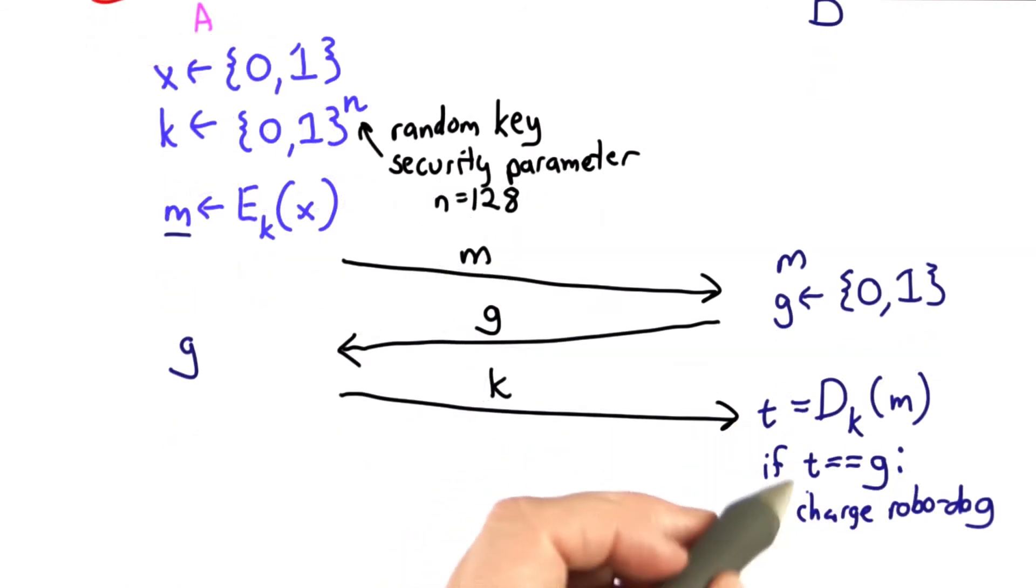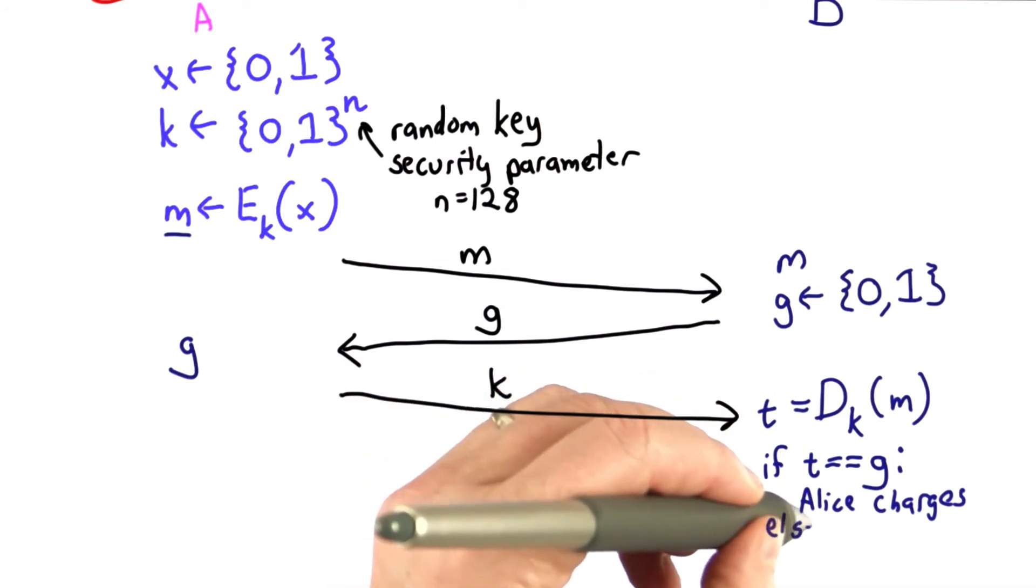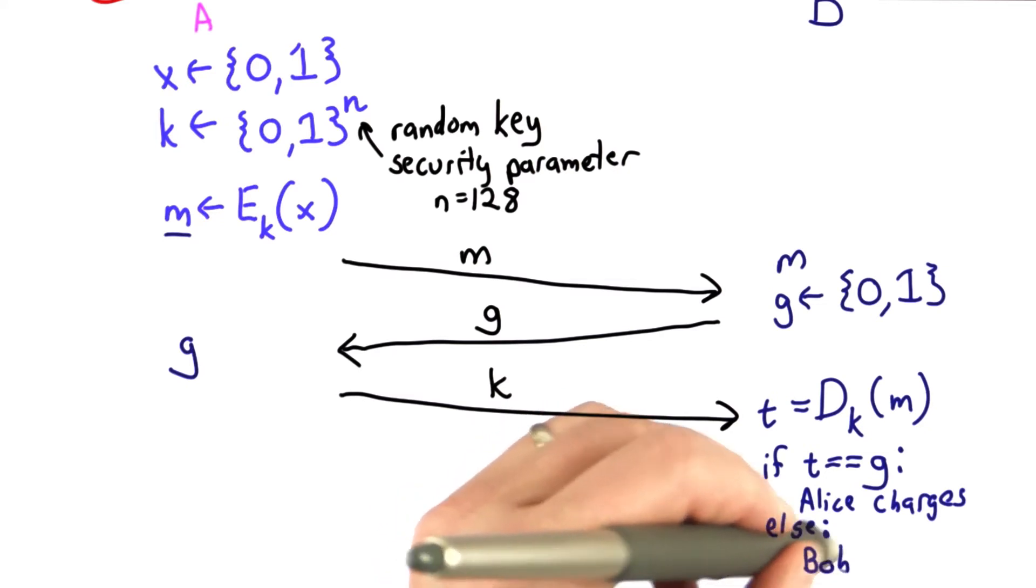At this stage, Bob can check whether or not he won the coin toss by comparing the value of t with the value of his guess. If they're equal, that means Bob guessed correctly and Alice should charge the robo-dog. If they're not equal, then it's up to Bob to charge the robo-dog.